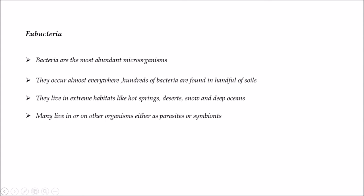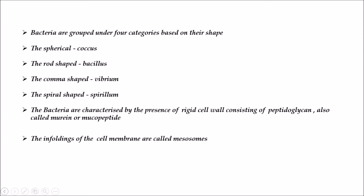Bacteria are categorized into four shapes: spherical bacteria called coccus, rod-shaped bacteria called bacillus, comma-shaped bacteria called vibrio, and spiral-shaped bacteria called spirillum.